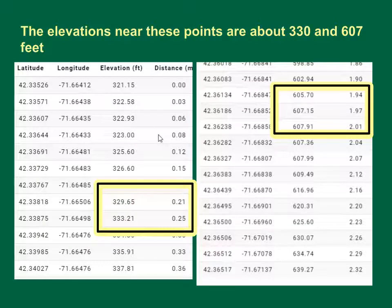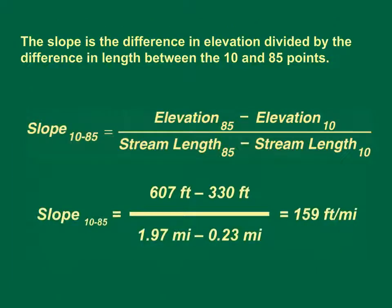The elevations near these points are at about 330 and 607 feet above sea level, respectively. The slope is the difference in elevation divided by the difference in length between the 10 and 85% points. In this case, it's 159 feet per mile.